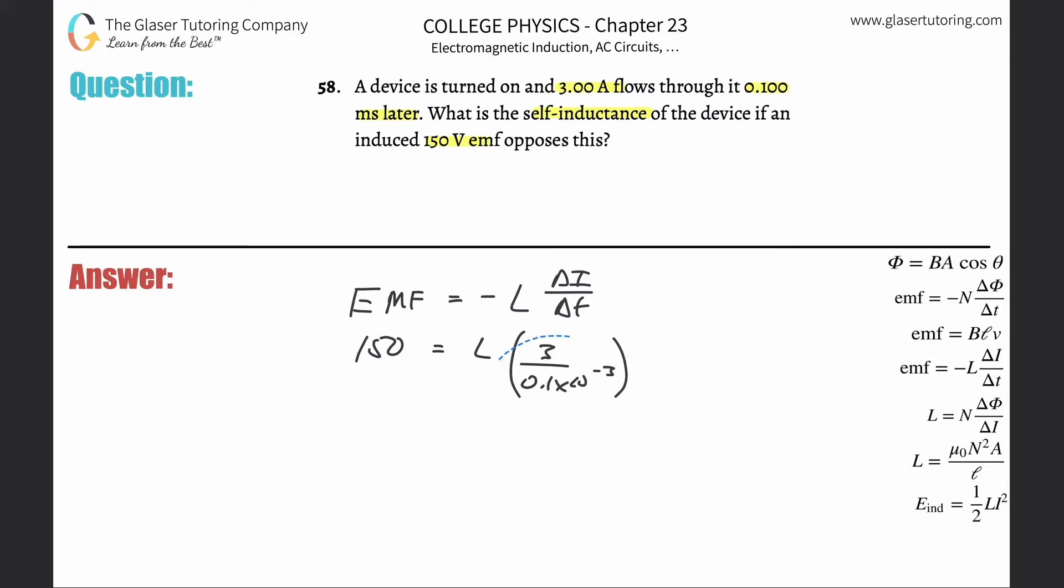So all we now need to do is basically just divide this term out, and there we go. So here's the self-inductance. It's going to be 150 divided by 3 divided by 0.1 times 10 to the minus 3.